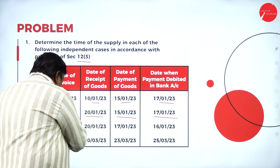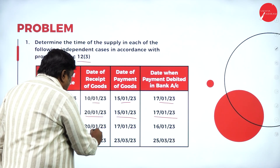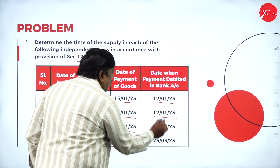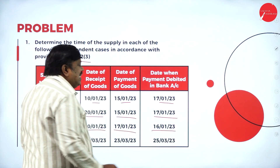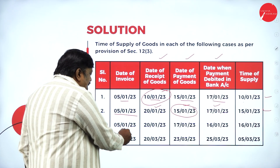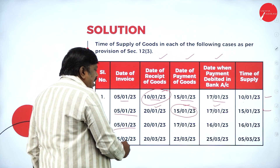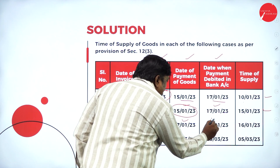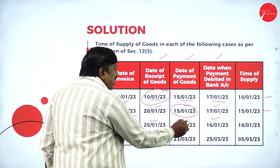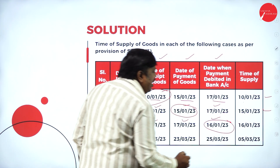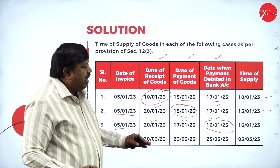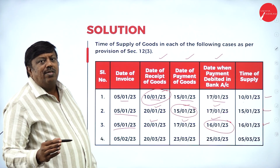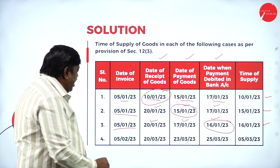Case 3: same invoice date of 5th January, date of receipt of goods is 20th, date of payment is 17th, and amount debited to bank account is 16th. We leave the invoice date 5th January and consider 20th January, 17th January, and 16th January. In these three, whichever is earlier — 16th January 2023 is the earliest, so the time of supply is 16th January 2023.